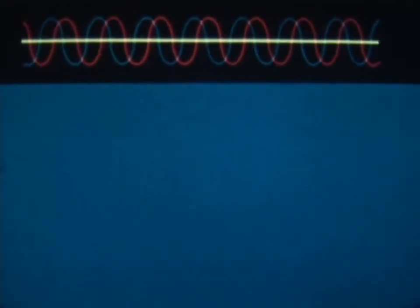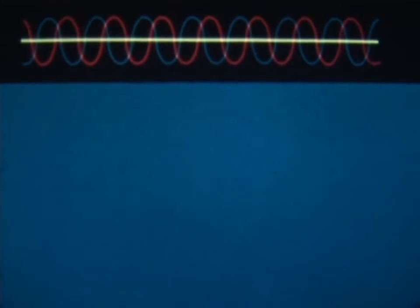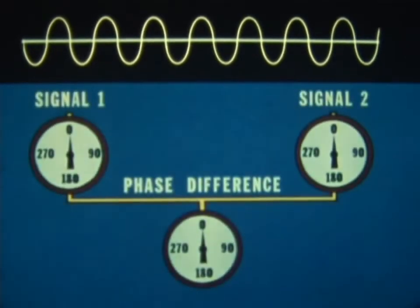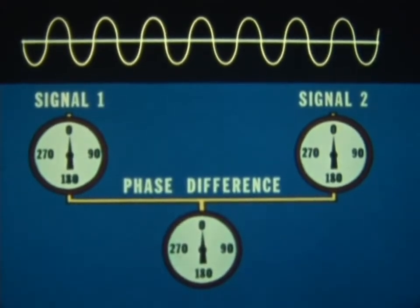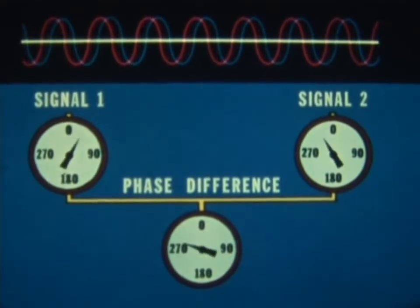To explain phase difference, we'll use sine waves to represent the signals being received. As long as these waves coincide, we can say that they're in phase, or that they have a zero phase difference. But as the relationship between the waves begins to change, a phase difference begins to appear.